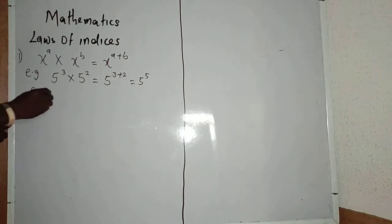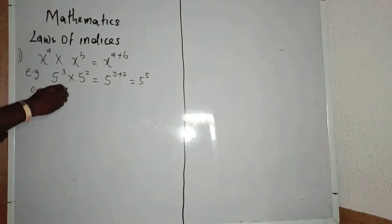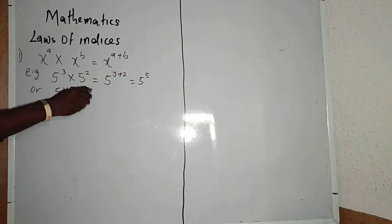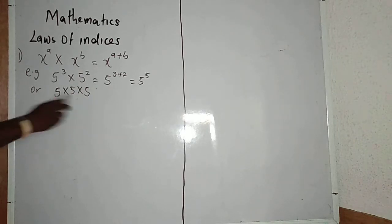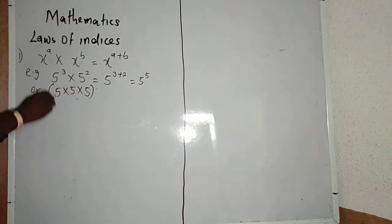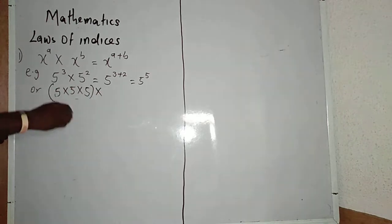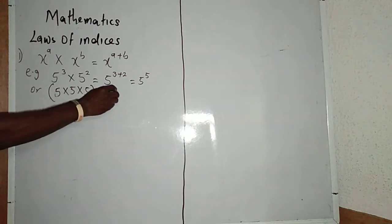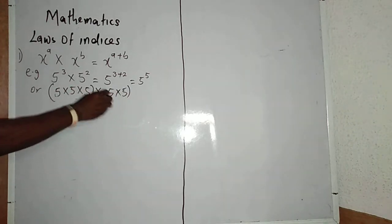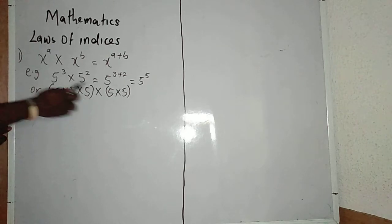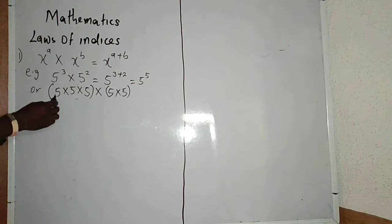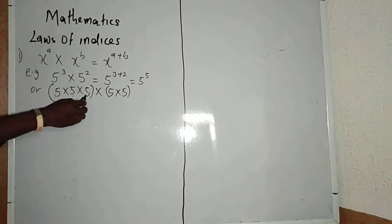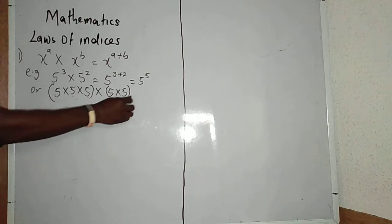We can verify this by expanding: 5 multiplied by 5 multiplied by 5, in brackets, multiplied by 5 multiplied by 5. Counting all the 5s — we have 3 fives from the first bracket and 2 fives from the second, giving us 5 fives in total, which is 5 raised to power 5.